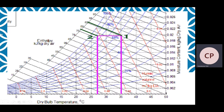The enthalpy in kJ per kg of dry air is read from the inclined lines on the psychometric chart, marked 65, 70, 75, 80, 85. We draw lines parallel to the enthalpy inclined lines passing through point 1 and point 2. The green line through point 1 intersects above 84, giving H1 equal to 85.4 kJ per kg of dry air. Similarly, H2 is equal to 77 kJ per kg of dry air.